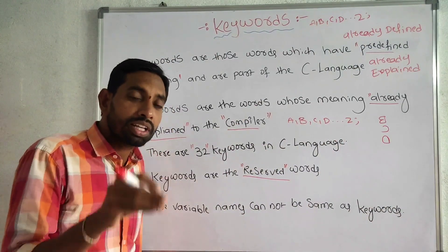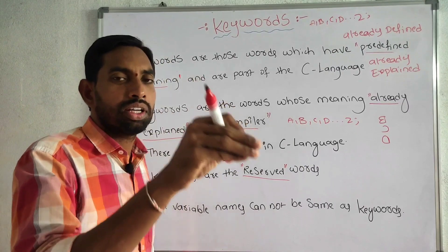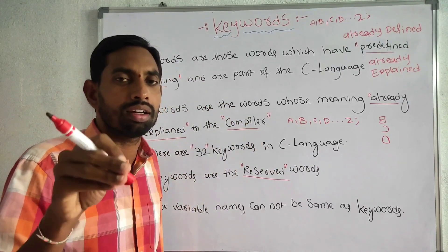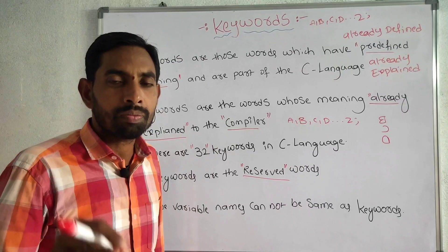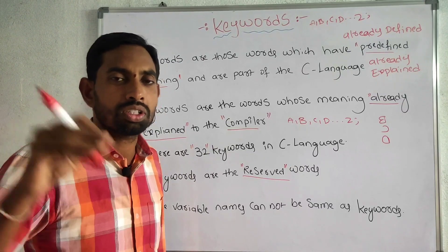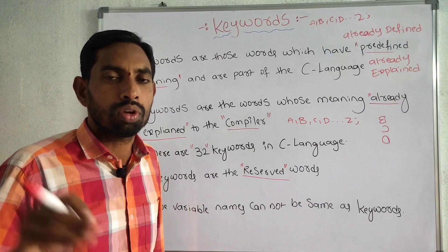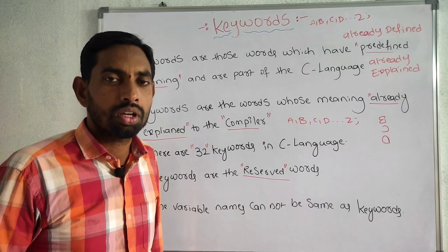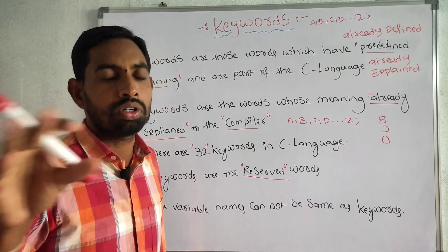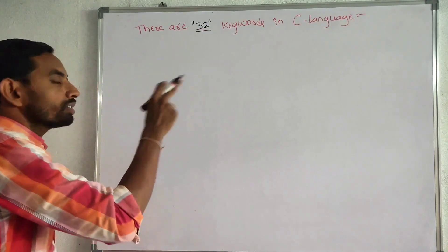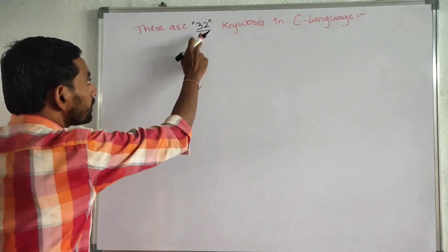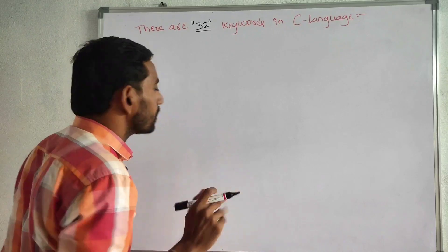The variables cannot be used as keywords. The variables are already explained in the variables topic — if you have any doubts, please watch my previous video on variables. Variables cannot be used as keywords. There are 32 keywords in C language.